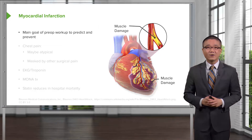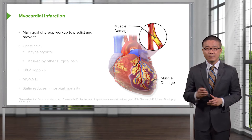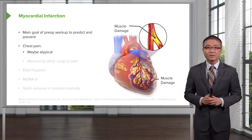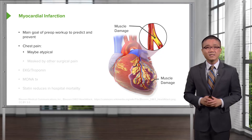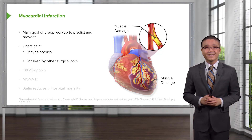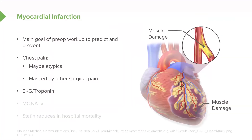What happens during a myocardial infarction is that the coronary vessels are not perfusing the heart enough with oxygen. Our main goal of the pre-op workup is to predict and try to prevent a post-operative myocardial infarction. Remember, patients who present with myocardial infarctions, particularly in the post-operative period, may have atypical symptoms. Because the patient may be experiencing pain elsewhere, it may be masked by other surgical pain. Get an EKG and a set of troponins — these are high-value, low-cost studies.